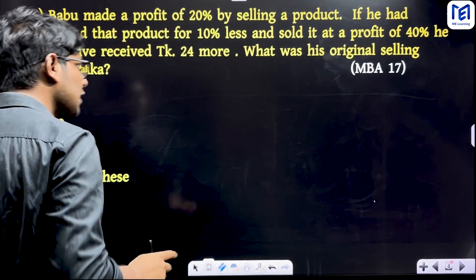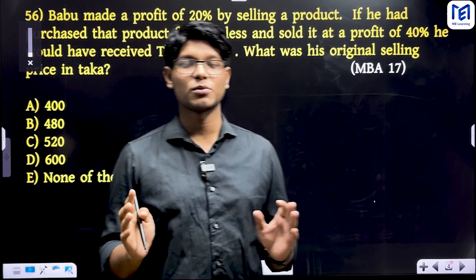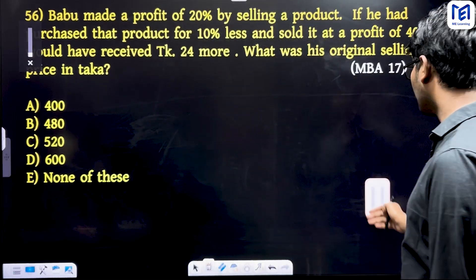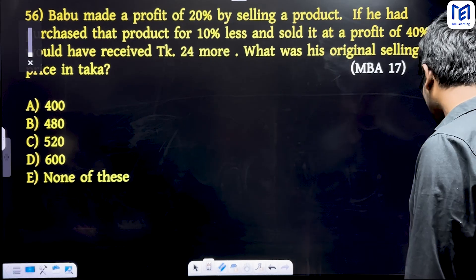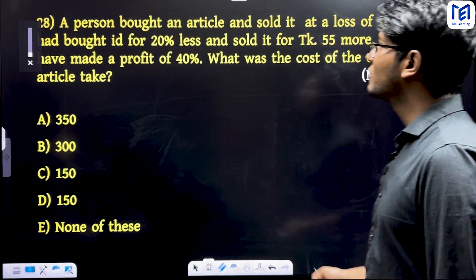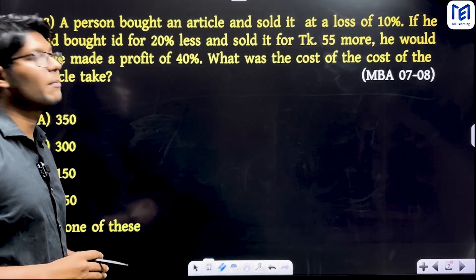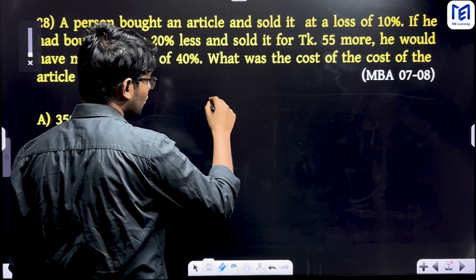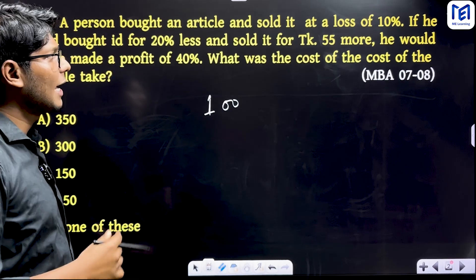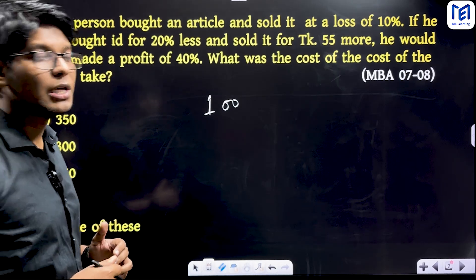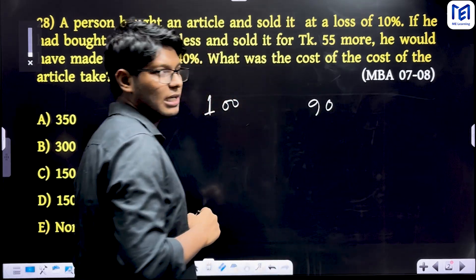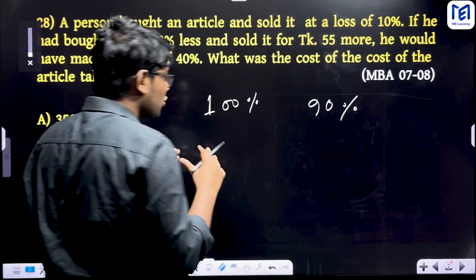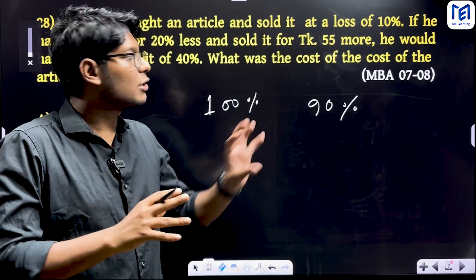This is the first type of math — the same approach applies across these problems. To solve: if the article is sold at 10% loss, the selling price is 90% of cost. If you want to find the percentage, 100% cost gives 90% selling price.